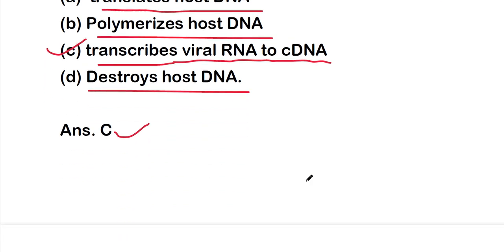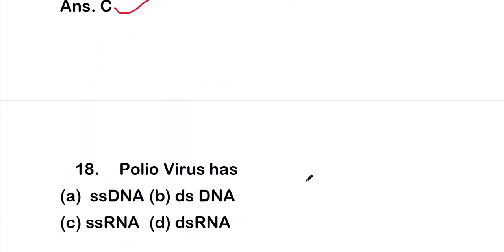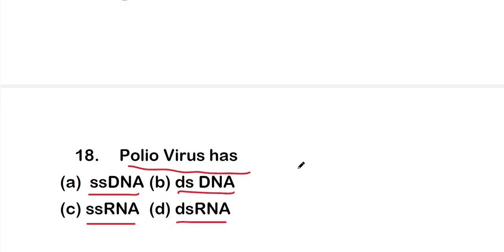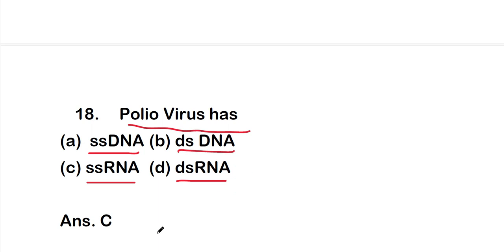Question 18: polio virus has — option A: single-stranded DNA, option B: double-stranded DNA, option C: single-stranded RNA, or option D: double-stranded RNA. The right answer is option C. Polio virus has single-stranded RNA as its genome.